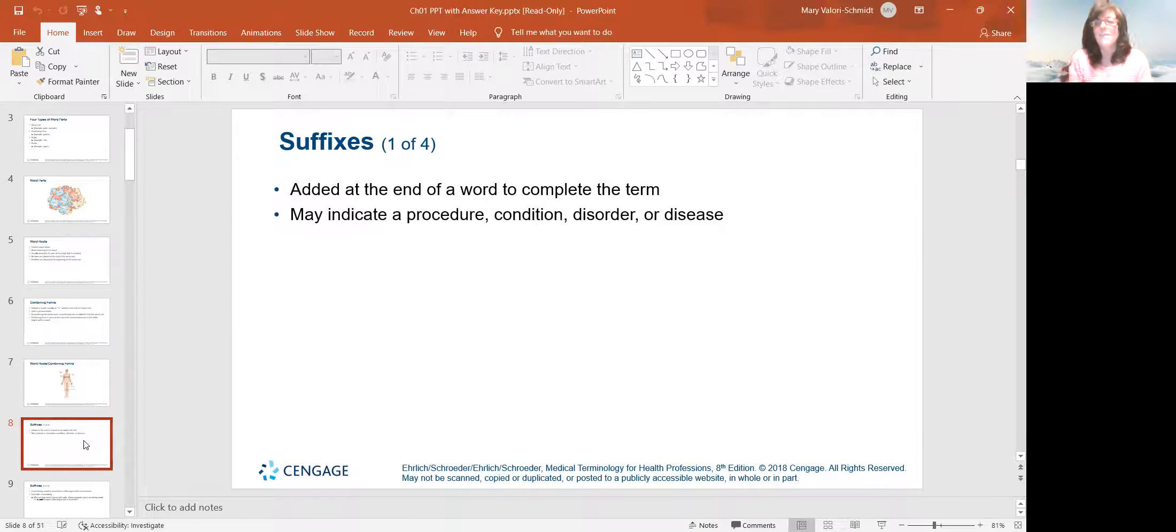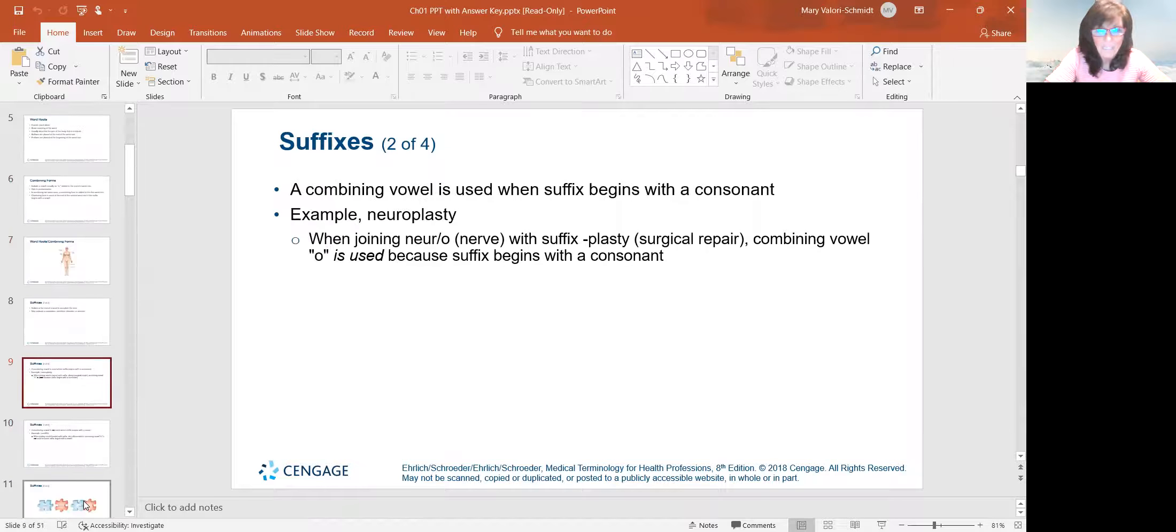So suffixes, when we put a suffix at the end of a word, it's put there so that it completes the term. Can talk about a procedure, a condition. Example, a rhinoplasty. Well, rhino pertains to the nose. Plasty as a suffix speaks to a changing of the shape or size. So a rhinoplasty is a nose job. That's why we use suffixes.